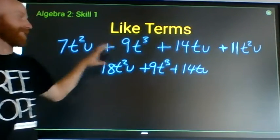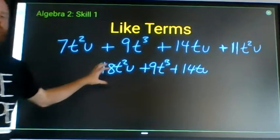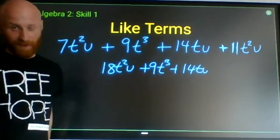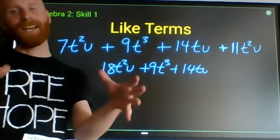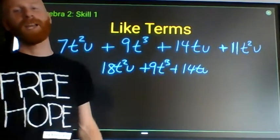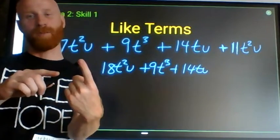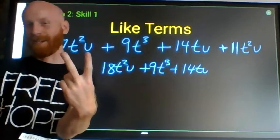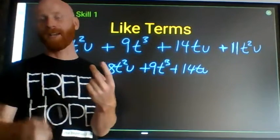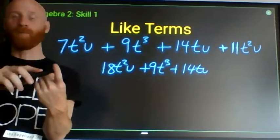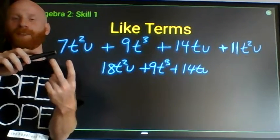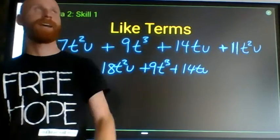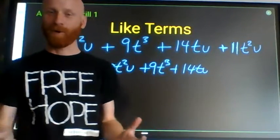So I could rewrite the expression by combining 11t-squared-u and 7t-squared-u as 18t-squared-u, but I couldn't combine anything else. The simplest form of that expression is still a trinomial — three terms. As a challenge: combining like terms is really just applying the commutative property and the reverse of the distributive property, essentially un-distributing.